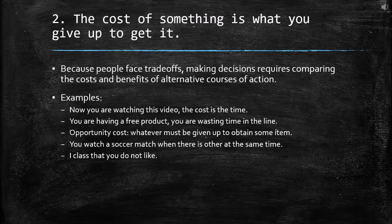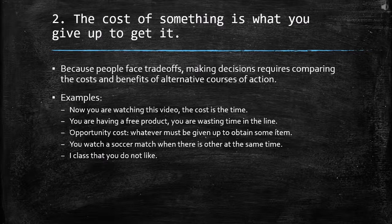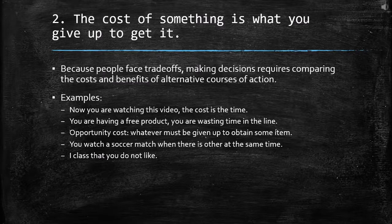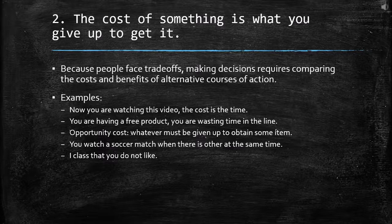You are doing something, but you're sacrificing something you could have done at the same time. For example, when you watch a soccer match while there is another match at the same time, you cannot split the screen, so you focus your attention on just one. Or what about a class you don't like? The opportunity cost is so high because you could do something else — even sleeping would be better than attending that class.